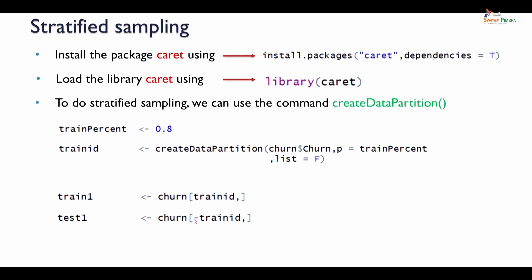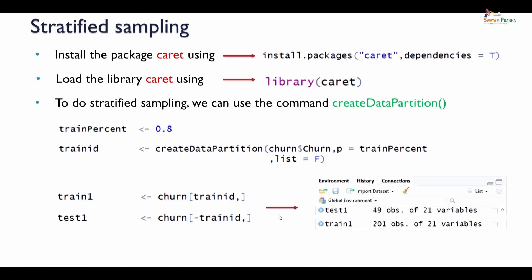For the test set, whatever is not in the `trainID` — the remaining 20 percent of the churn data — will be considered as test. We have installed the caret package, loaded it, used `createDataPartition` to get the stratified sample IDs, subsetted those IDs as train set, and by excluding those IDs we got the test set. After this the test set has 49 observations with 21 variables and the train set has 201 observations with 21 variables.